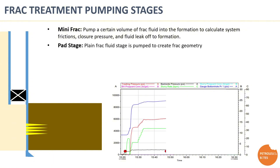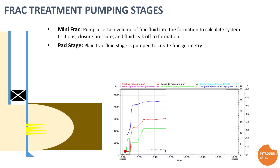The pad stage is the first stage of the main frack treatment. It consists only of frack fluid. The main objective of this stage is to create the main frack geometry and provide enough volume to place the proppant coming in the next stages.